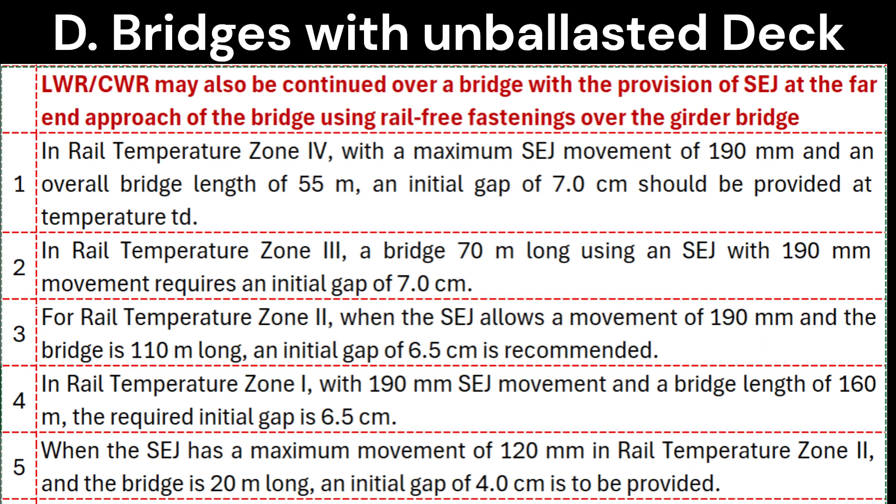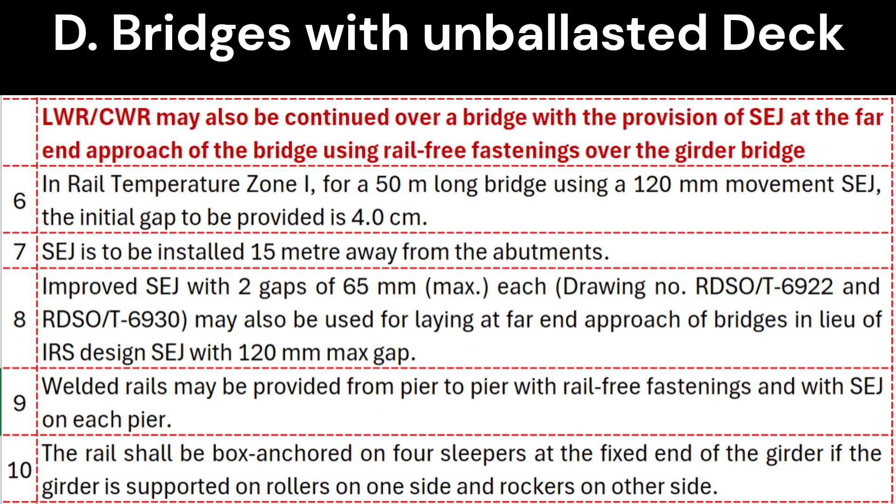5. When the SEJ has a maximum movement of 120 mm in rail temperature zone 2 and the bridge is 20 meters long, an initial gap of 4.0 cm is to be provided. 6. In rail temperature zone I, for a 50 meters long bridge using a 120 mm movement SEJ, the initial gap to be provided is 4.0 cm. 7. SEJ is to be installed 15 meters away from the abutments. 8. Improved SEJ with gaps of 65 mm max each, drawing no. RDSOT 6922 and RDSOT 6930, may also be used for laying at far end approach of bridges in lieu of IRS design SEJ with 120 mm max gap.